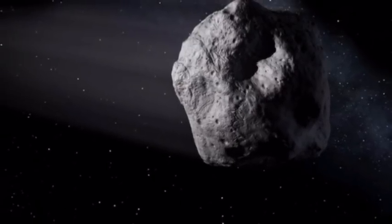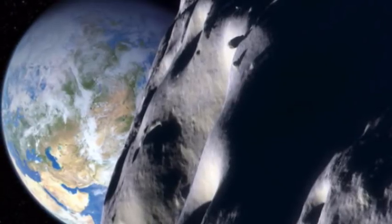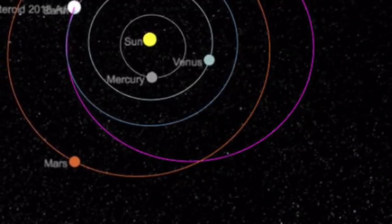NASA's Jet Propulsion Laboratory predicts the asteroid will zoom by the moon around 4:26 a.m. BST and fly by Earth around 6:29 a.m. BST.